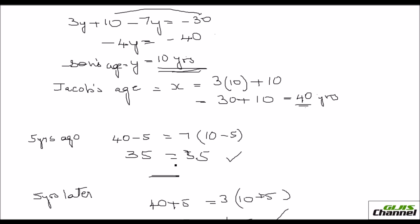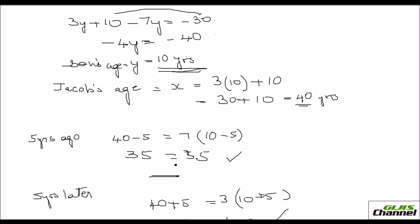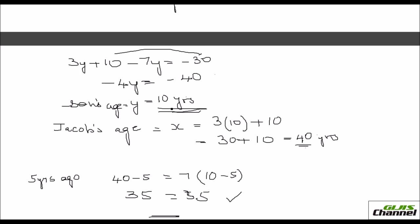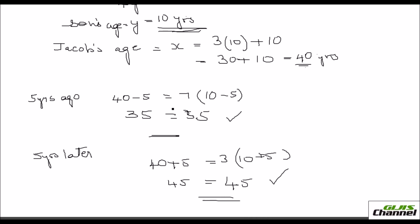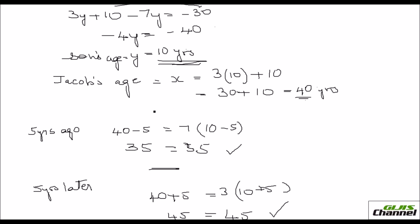To summarize: find what one variable is in terms of another, substitute it into the second equation, get the value of one variable, then use that to find the second variable. Hope you all understood. Thank you, bye.